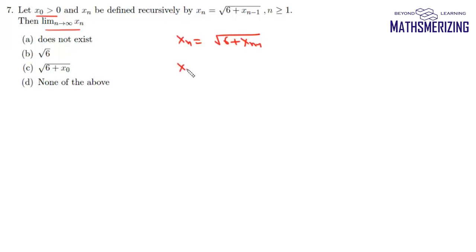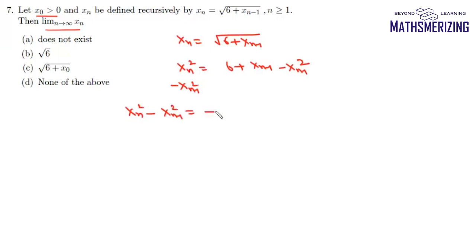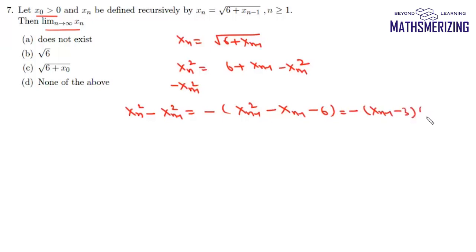We can write this as xn squared equals six plus xn minus one. Now we subtract xn minus one squared from both sides, giving xn squared minus xn minus one whole squared. Taking minus common, we get xn minus one squared minus xn minus one minus six, and factorizing, we can write this as (xn minus one minus three)(xn minus one plus two).